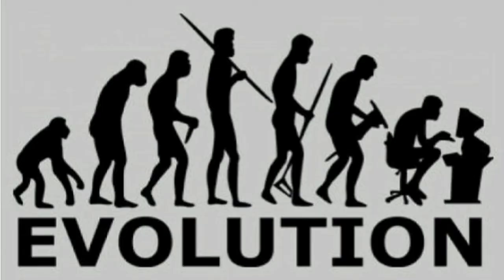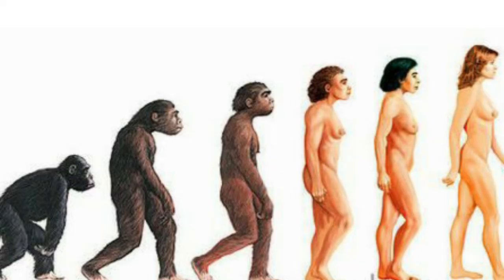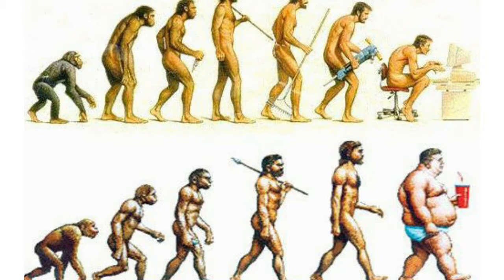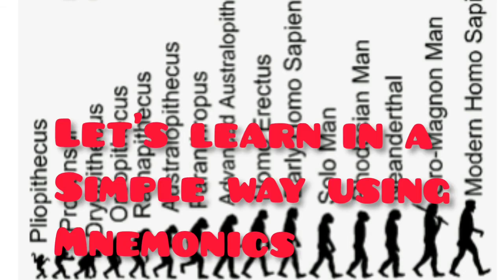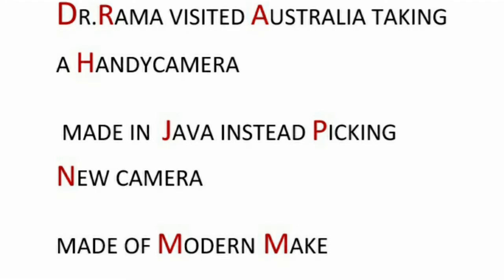Now comes the most difficult and tricky part — remembering the sequence of human evolution, that is the human ancestors. Let me describe it in a very tricky way using mnemonics. The mnemonic is: Dr. Rama visited Australia taking handy camera made in Java instead picking new camera made of modern make.